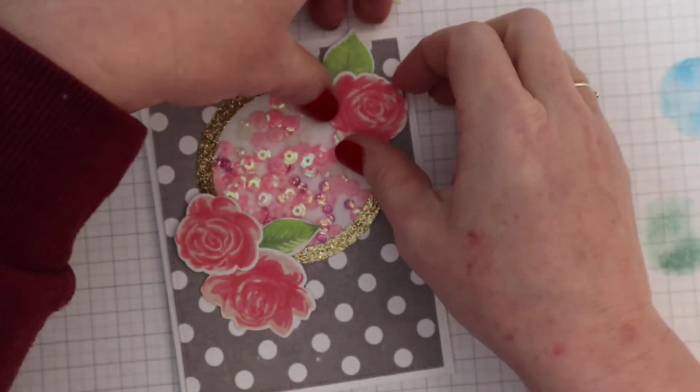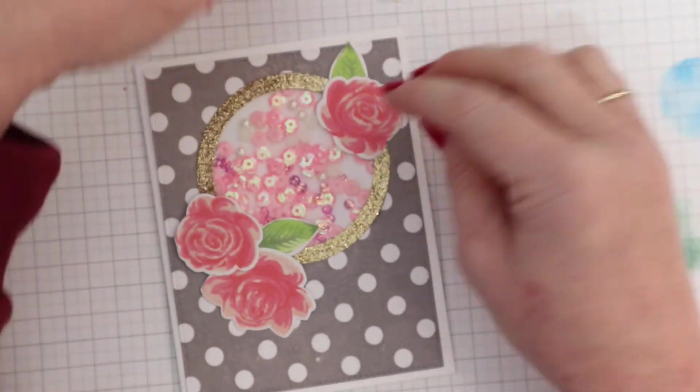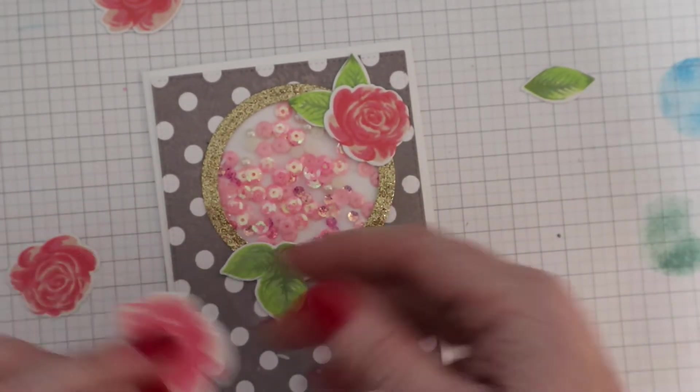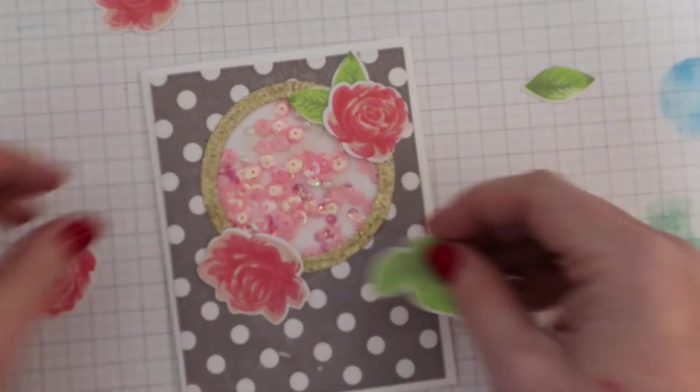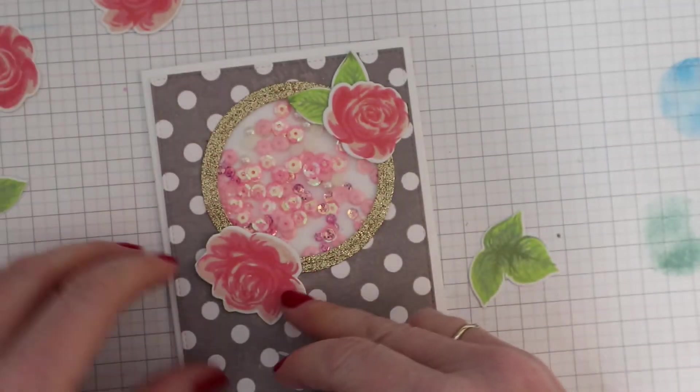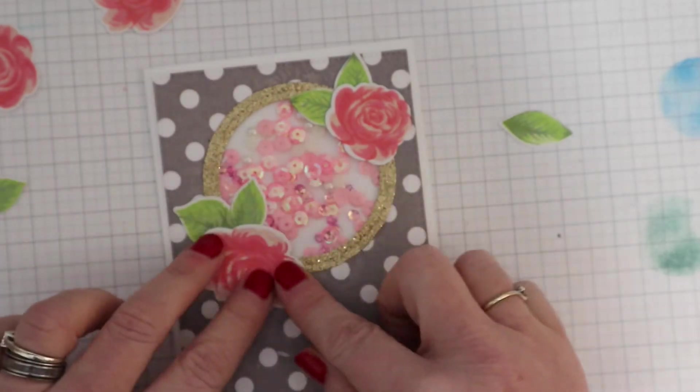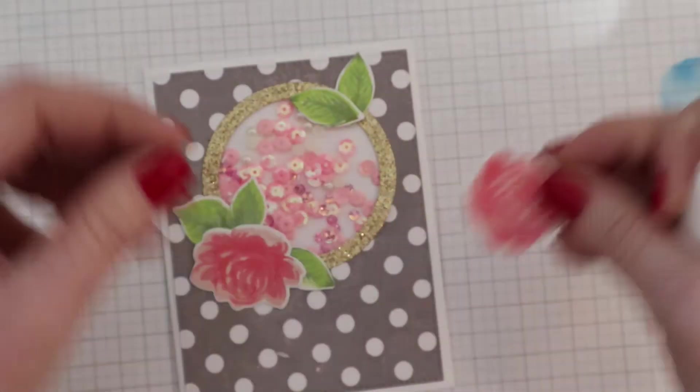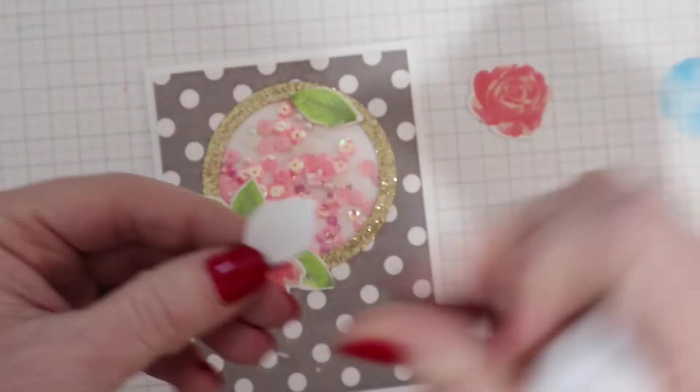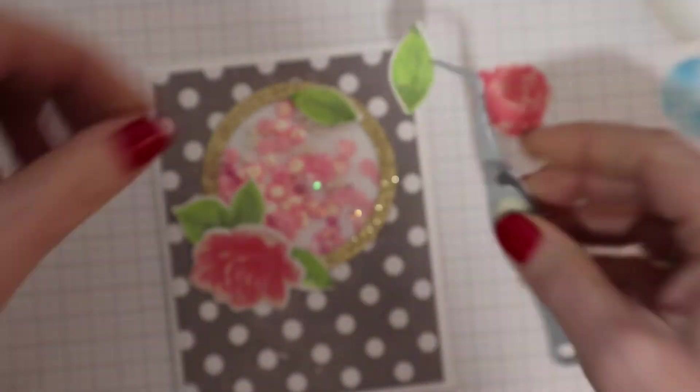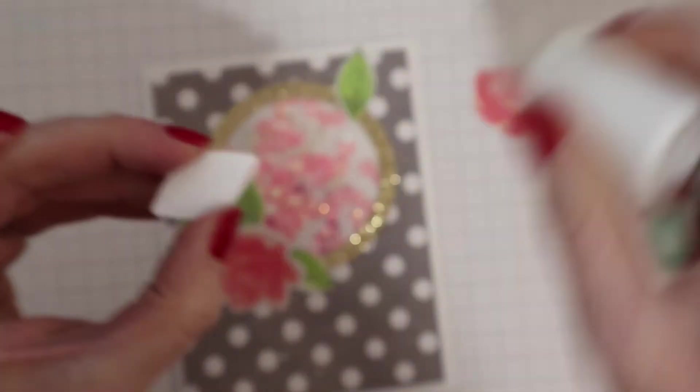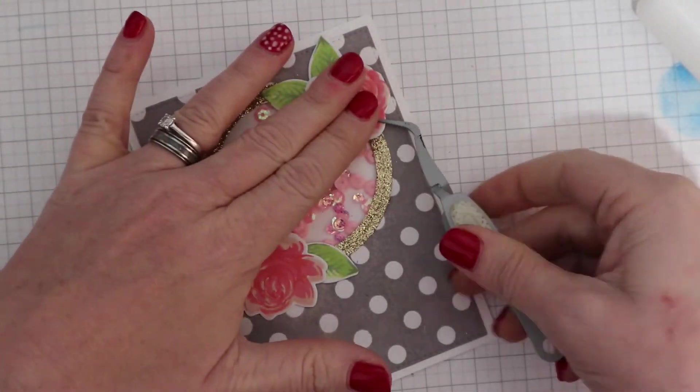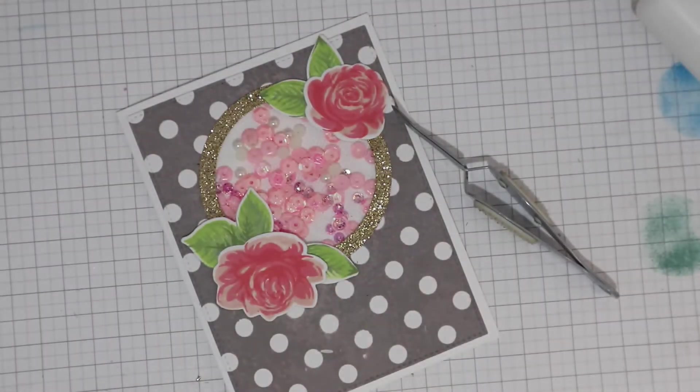Here I am just messing about with the flowers and the leaves, trying to decide what sort of order, what layout I like. This can take a couple of minutes, but you've got to get it right. There we go, finally settled on just two roses, so the other ones will go away for another project. Then I'm using Ranger Multi Matte Medium just to stick those to the front of the card base, and my trusty tweezers so that my big fingers don't get in the way.